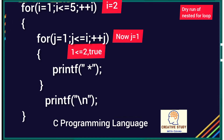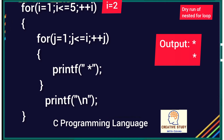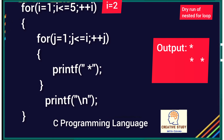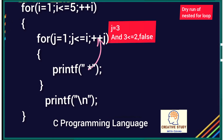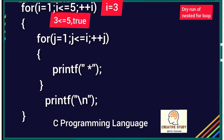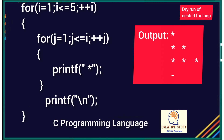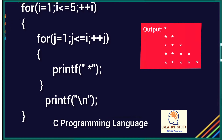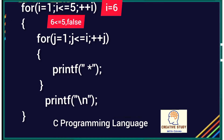When i becomes two, the inner loop executes again. j equals one — true — prints a star. j equals two — also true — prints another star. j equals three and three is less than or equal to two is false, terminating the inner loop, then a new line. When i is three, the inner loop runs three times printing three stars. For i equal to four, j executes four times; for i equal to five, j executes five times printing five stars. When i becomes six, six is less than or equal to five is false and the outer loop terminates.